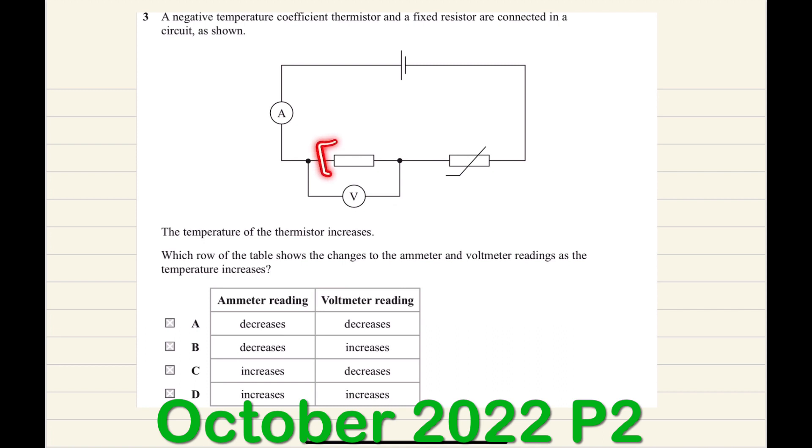The total resistance of both the fixed resistor and the thermistor becomes less, which allows more current to pass through the main circuit. Therefore, the reading of the ammeter increases.